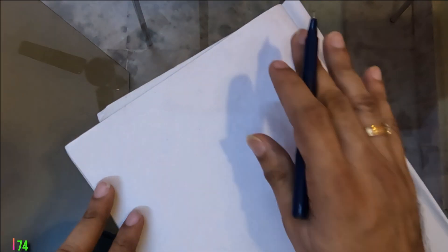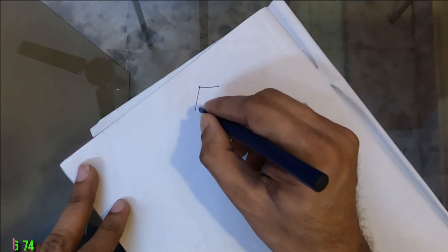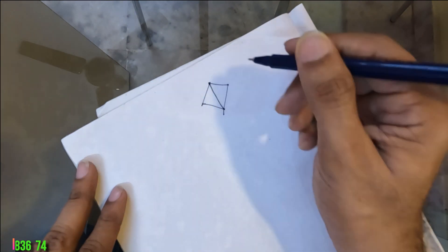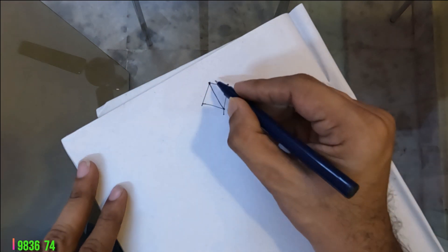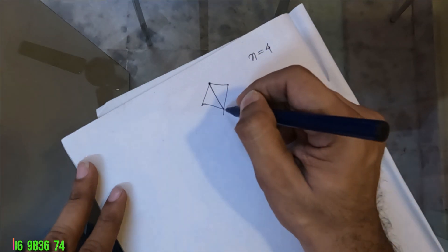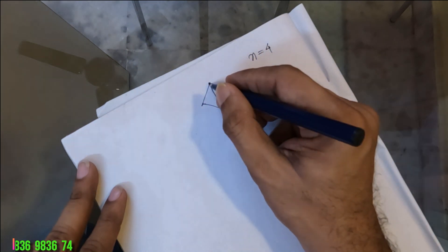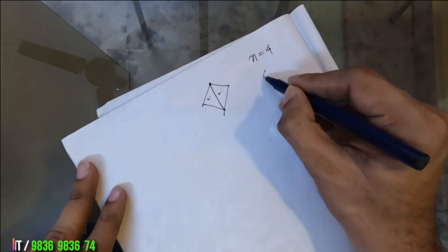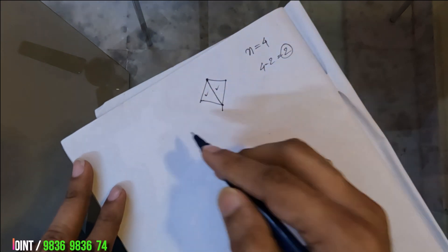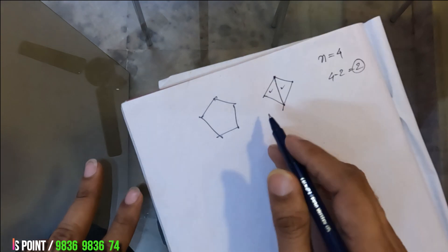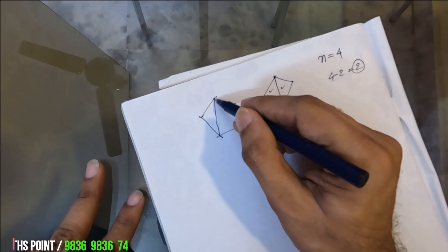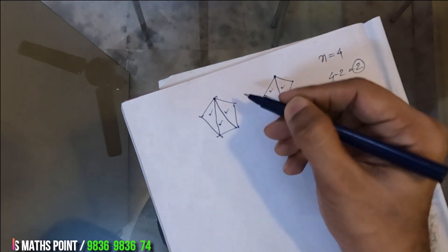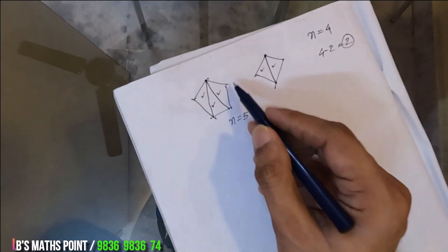What happens next? We see the sides of the polygon. The opposite sides of the polygon form lines and bands. The number of sides of that polygon is 5.